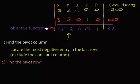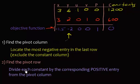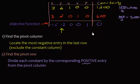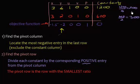Step two: find the pivot row. Divide each constant by its corresponding positive entry from the pivot column — it must be positive, so you skip any negative entries. We get 1,200 divided by 6, which is 200, and 600 divided by 2, which is 300. The pivot row is the row with the smallest ratio — 200 is smallest — so six is our pivot element.